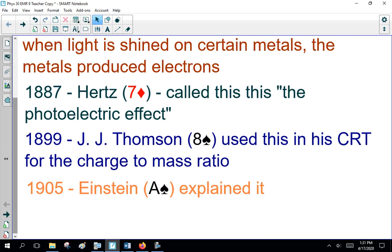1899, J. J. Thompson, the eight of spades, used this in his cathode ray tube for the charge-to-mass ratio. And in 1905, Einstein, the ace of spades, explained this.